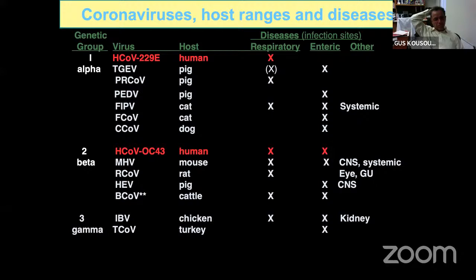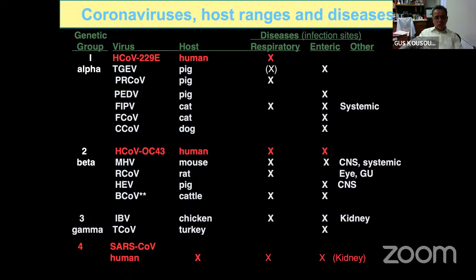These viruses have been extensively studied. The tropism of most of them is respiratory but also enteric — they can alternate between respiratory and enteric, as we also see for SARS-CoV-2. SARS-CoV-2 affects humans and potentially certain animals, though not at a level significant for transmission. It causes respiratory infection primarily, but also enteric, multi-organ, and neurological symptoms.